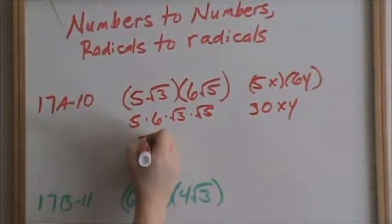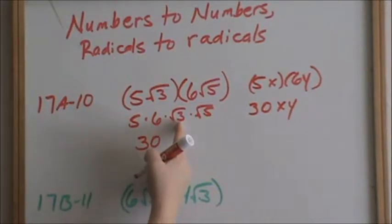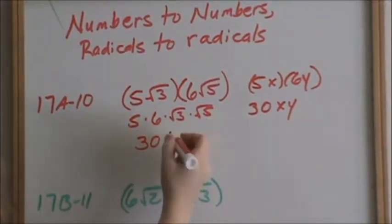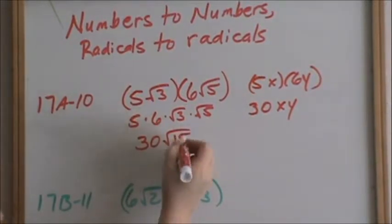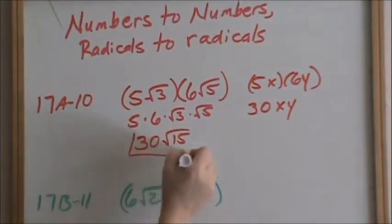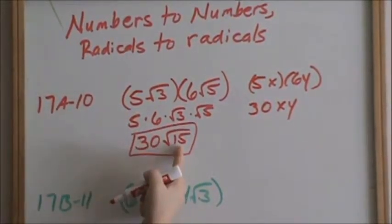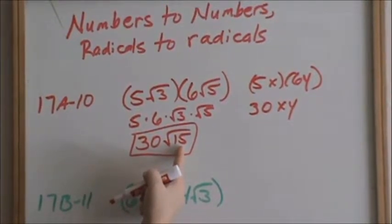Multiplying our numbers together, I get 30. Multiplying our radicals together, square root of 3 times square root of 5 is square root of 15. I almost told you the answer. For simplifying radicals, see the simplifying radicals video.